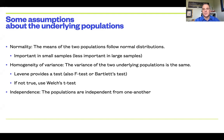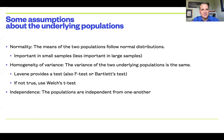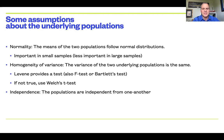There are some assumptions that go with the independent samples t-test about the underlying populations, and three of them are fairly important. The first one is the assumption of normality. We assume that the means of the populations follow normal distributions. This isn't exactly the same thing as saying the underlying populations both need to be normally distributed. If our samples themselves are normally distributed, this is a good sign that the populations are normally distributed and things are going to work out.